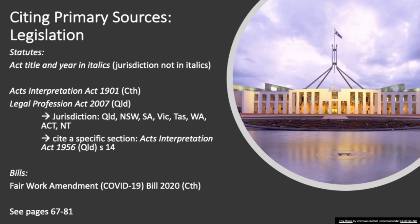There is a slight variation when citing bills. Bills haven't been passed by parliament yet — they are proposed legislative changes that have not yet completed the legislative process to become an Act. When citing bills, we follow the same format: title, year, and abbreviated jurisdiction in brackets, but we do not italicize the title or the year. Note that the word 'bill' appears rather than 'Act' and it is not italicized — that is the main difference. The AGLC has further rules for citing explanatory memoranda, regulations, rules and other legislative materials, so make sure you read that section thoroughly.